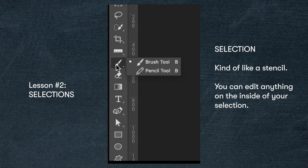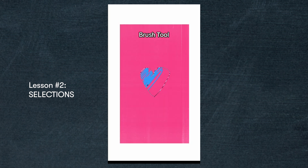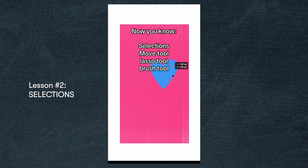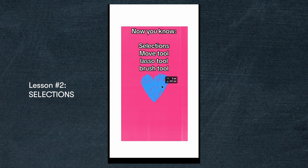So let's bring it back into Photoshop. I'm going to grab the brush tool and you can see that I'm coloring inside my selection but I can't color on the outside, just like I did on the paper stencil.